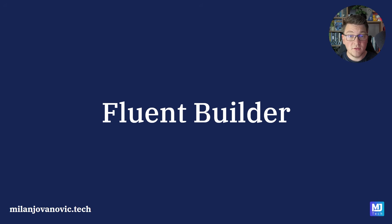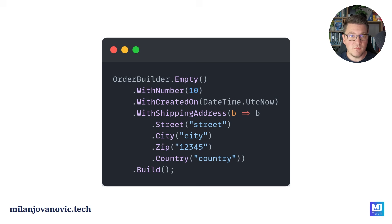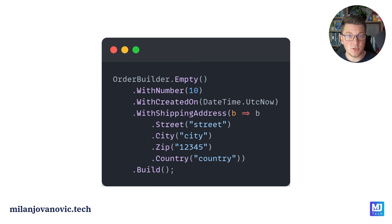Let's discuss the Fluent Builder Pattern. Here's an example of an Order Builder that implements the Fluent Builder Pattern. We start by creating an empty order, and then we can add additional data — for example, we can specify the order number, when it was created, and we can also configure any nested types inside of an order, such as the shipping address. When we are satisfied with the state of our order, we can call the build method to produce an order instance.